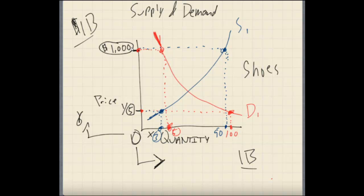Okay, so we have 90 and three. This basically tells us that at $5, suppliers are going to want to make three pairs of shoes, and at $1,000 they're going to want to make 90 pairs of shoes.